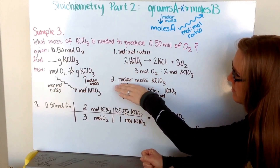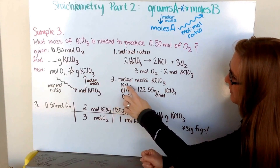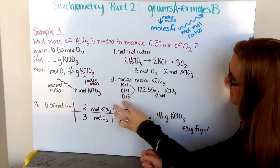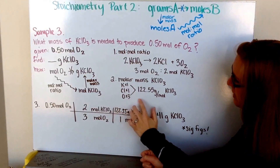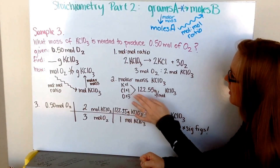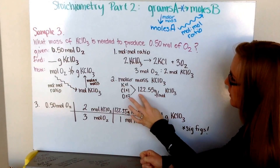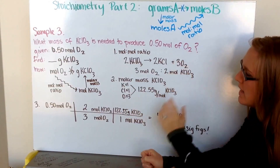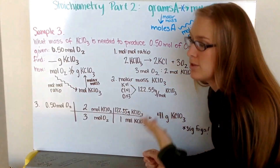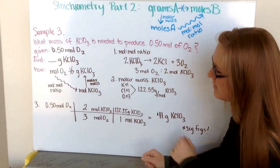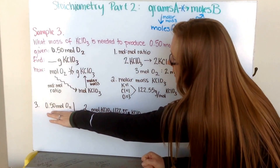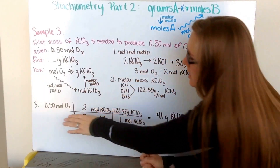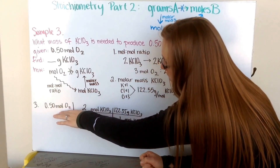I also need my molar mass of potassium chlorate. I get that by taking the average atomic masses of all three elements — potassium, chlorine, and 3 oxygens multiplied by 3 — and adding them together in the standard way to calculate molar mass. My molar mass of potassium chlorate is 122.55 grams per mole. Now that I have all my components and conversion factors, I start with what I'm given: 0.50 moles of oxygen.